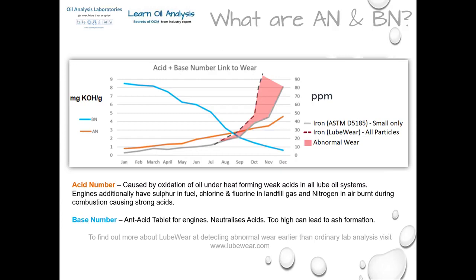Looking at the graph on screen, we start sampling a machine with a new oil change every month for a year without changing oil. In January and February the base number is high, the acid number is low, and wear is also low. You may notice the acid number does not start at zero — this is because additives react with lab test chemicals similarly to acids, giving a false positive. That is why a baseline starting point is important for trending. As time goes on, the acid number and base number come closer together, and eventually as they cross, the iron wear rate increases.